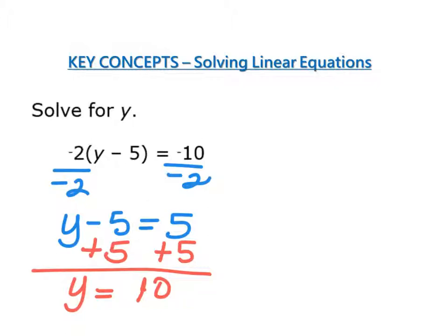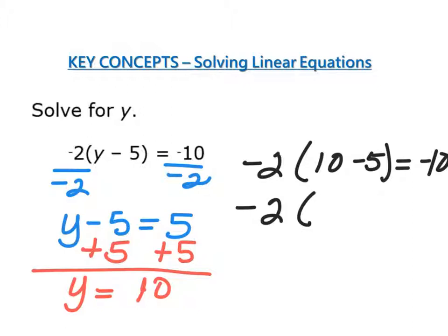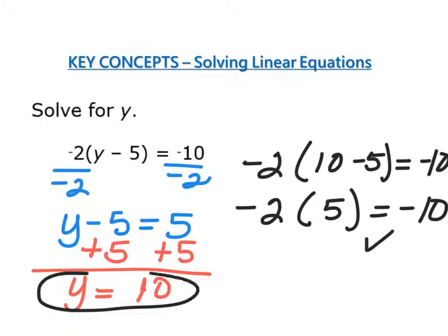Again, I'm going to check it. So I have negative 2 times 10 minus 5 equals negative 10. I do what's in parentheses first, so I have negative 2 times 5 equals negative 10. Well, negative 2 times 5 is negative 10, so I've done it correctly, so y has to equal 10.